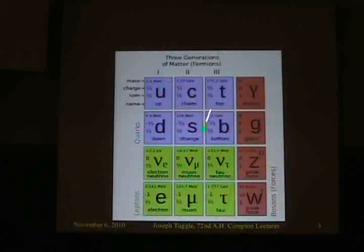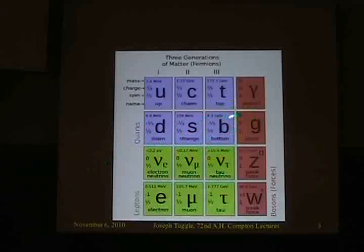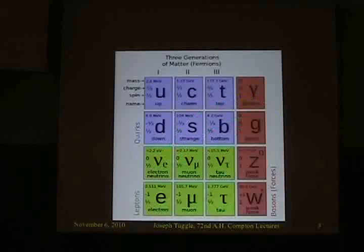For example, the down quark found inside protons and neutrons is very similar to the bottom quark — the only difference is the bottom quark is about 500 times heavier. Other than that, they're exactly the same. They have the same interactions with the electromagnetic force, the same interactions with the weak nuclear force, and similar interactions with the strong nuclear force. This is kind of a puzzle — why are there three columns that seem to be copies?